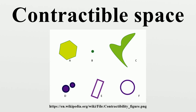For a topological space X, the following are all equivalent: X is contractible; X is homotopy equivalent to a one-point space; X deformation retracts onto a point; any two maps F, G from Y to X are homotopic; any map F from Y to X is null-homotopic.